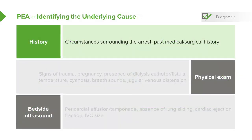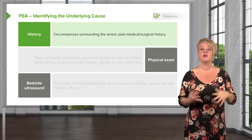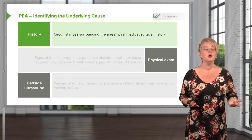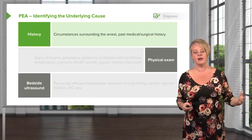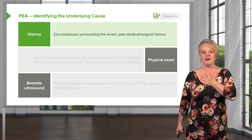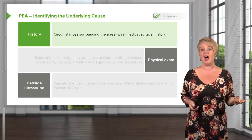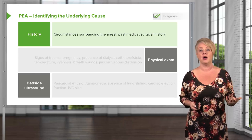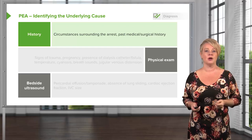With PEA it's even more important than with other types of cardiac arrest to understand the underlying cause. You want to get as much information as possible about the circumstances leading up to the arrest. What was the patient doing when it happened? Did they have symptoms beforehand — did they clutch their chest, complain of pain, gasp for breath, turn blue? Did they attempt suicide? Was there trauma? All of these help narrow the differential for PEA and guide treatment.